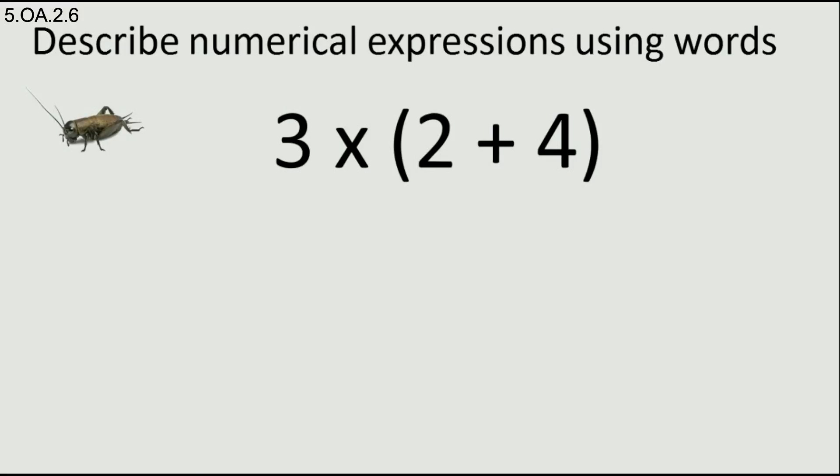Now this should be simple. 3 multiplied with the sum of 2 and 4. We have to describe this group. So we have 3 times a group, the sum of 2 and 4.